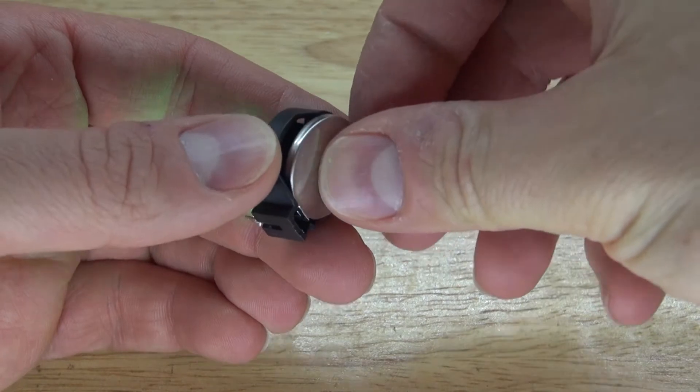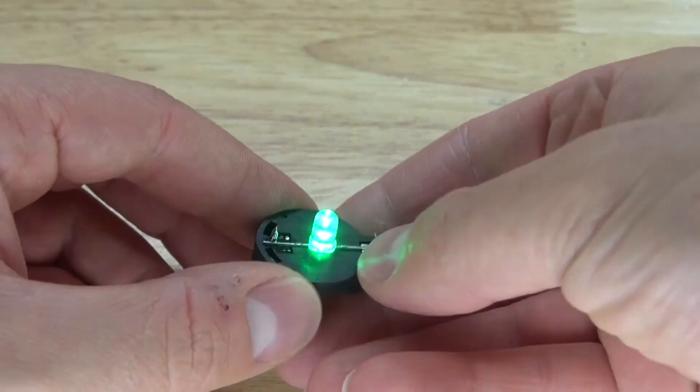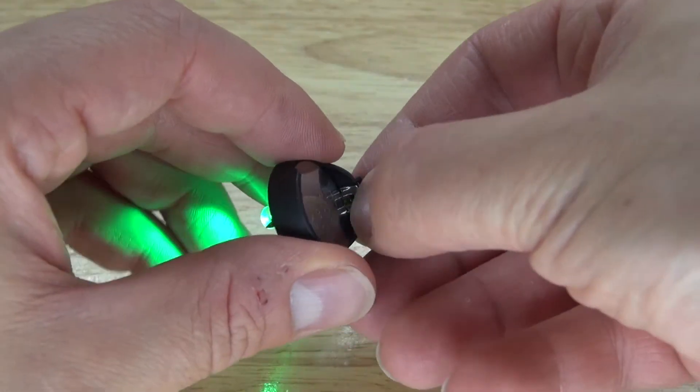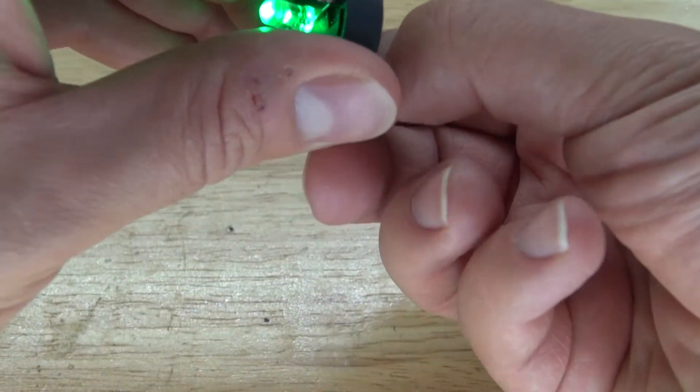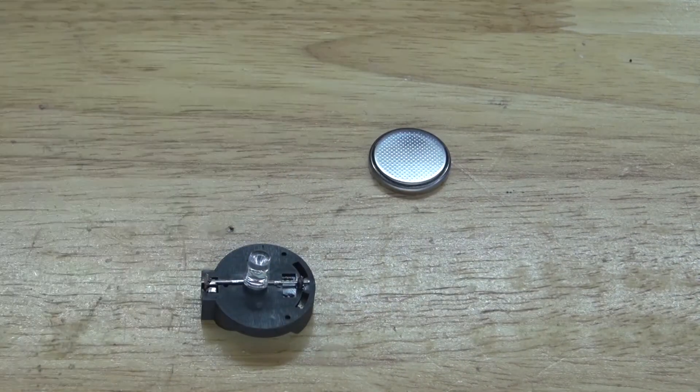Next, take the button cell battery and place it inside of the button cell battery holder. Just like this. And there, the LED immediately turns on. Just like this. And to turn it off, just remove the battery. There, just like that.